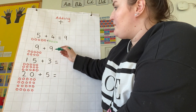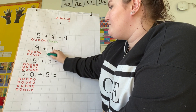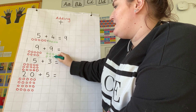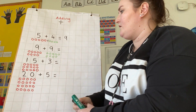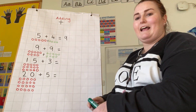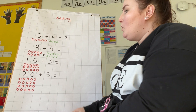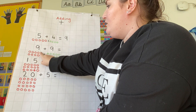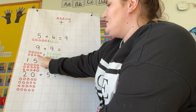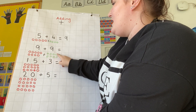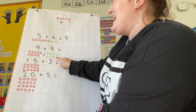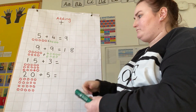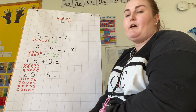Now I'm going to represent the number I'm adding, which happens to be nine again. Still going to do it in a different colored pen so I know I'm representing a different number: one, two, three, four, five, six, seven, eight, nine. I've got a representation of both my numbers. Now I need to add them together — how many have I got altogether? Count with me: one, two, three, four, five, six, seven, eight, nine, ten, eleven, twelve, thirteen, fourteen, fifteen, sixteen, seventeen, eighteen. So nine add nine is eighteen.